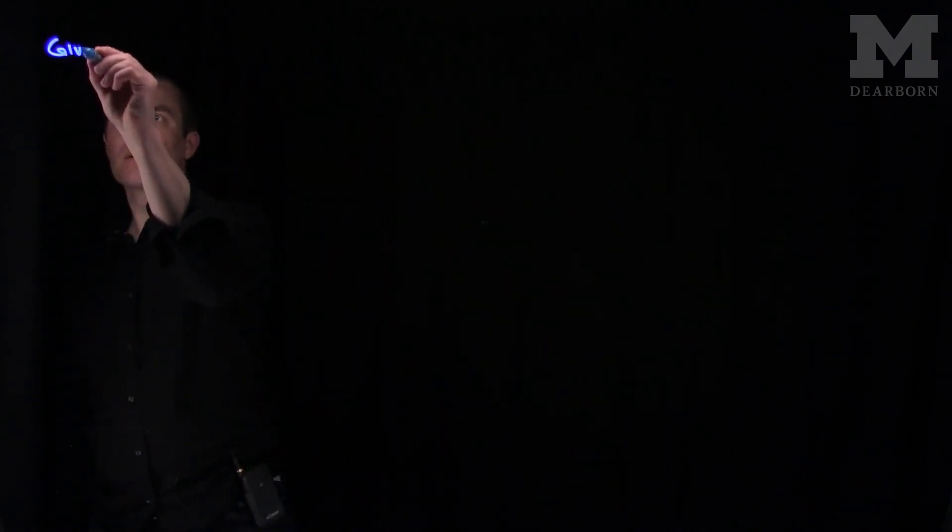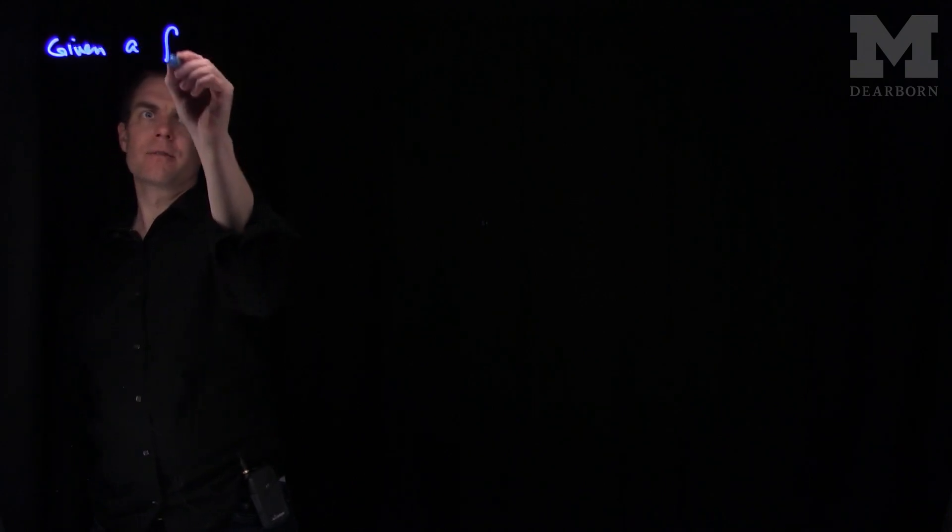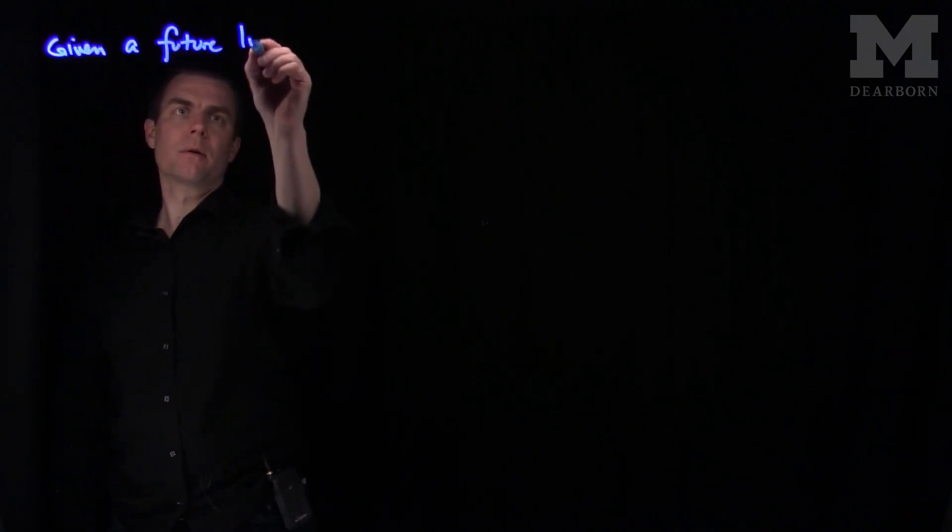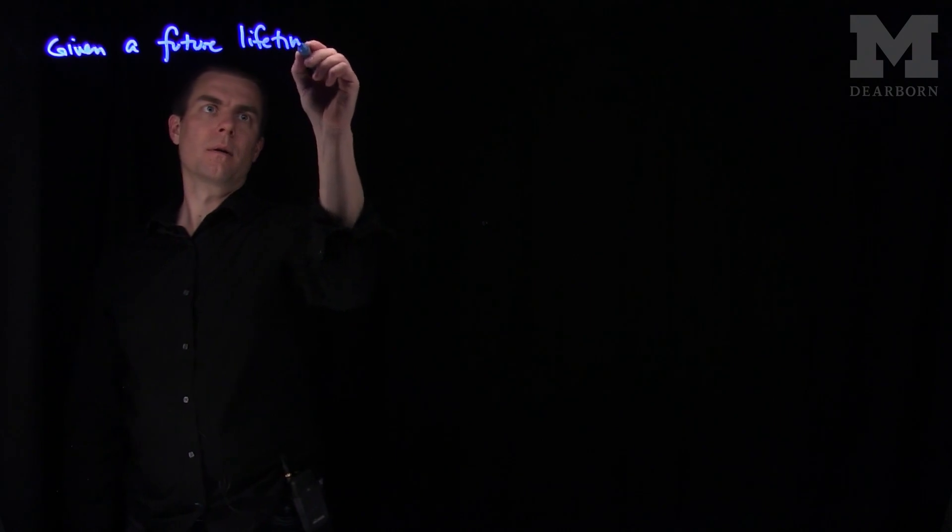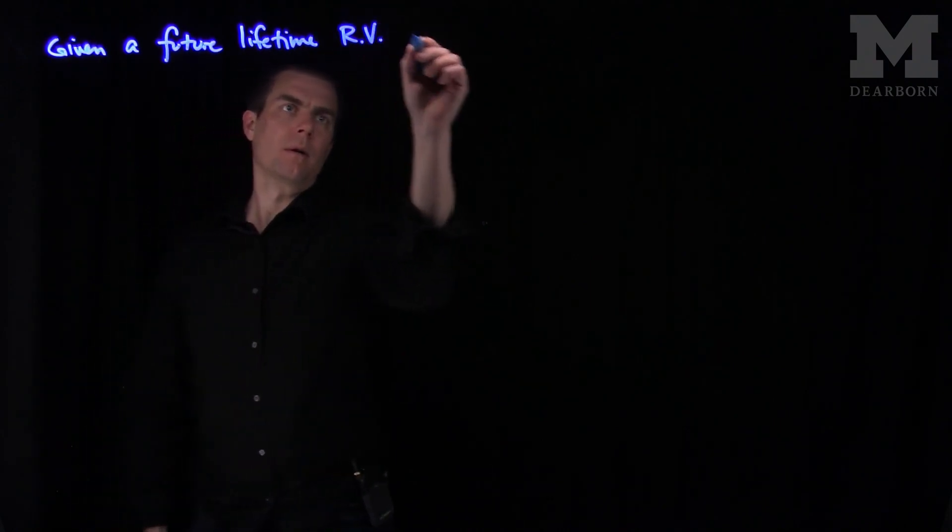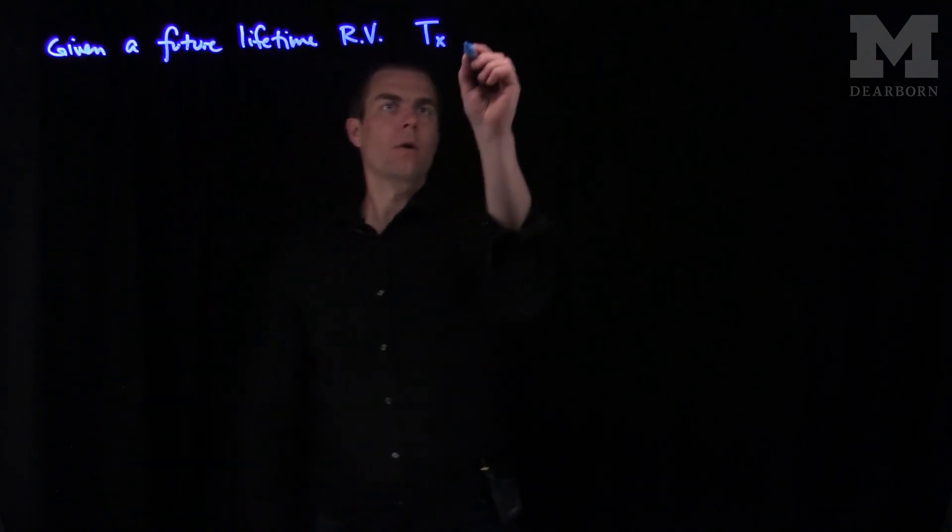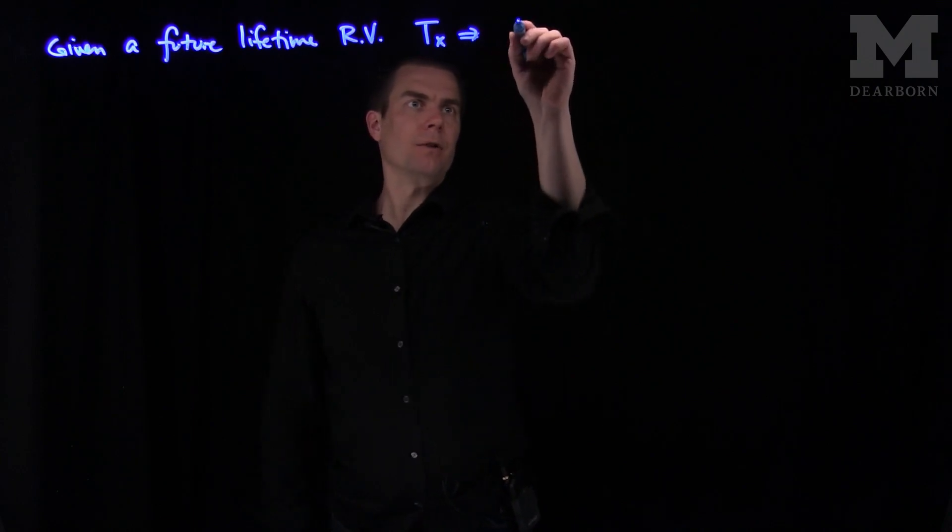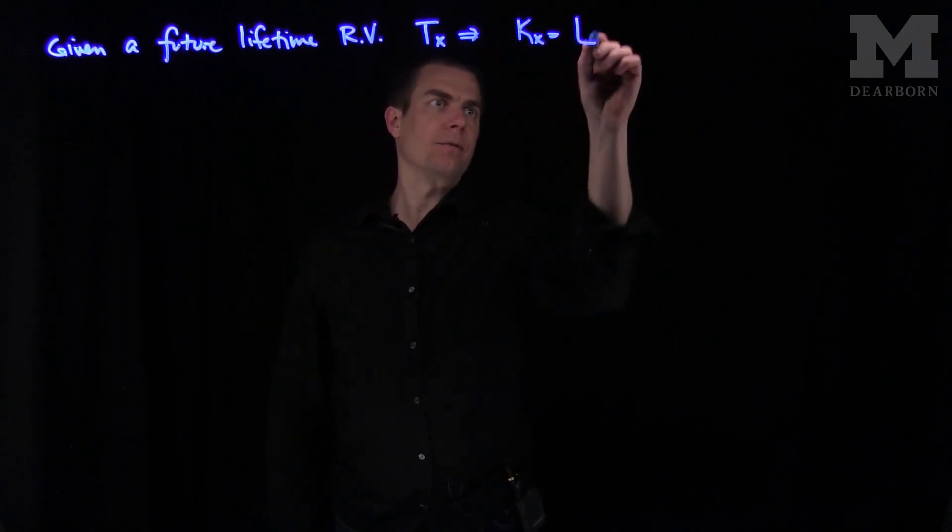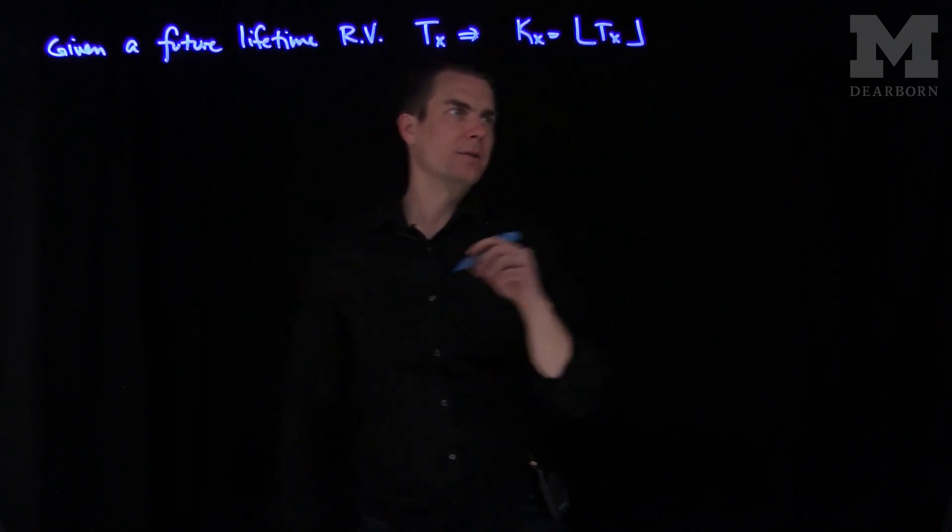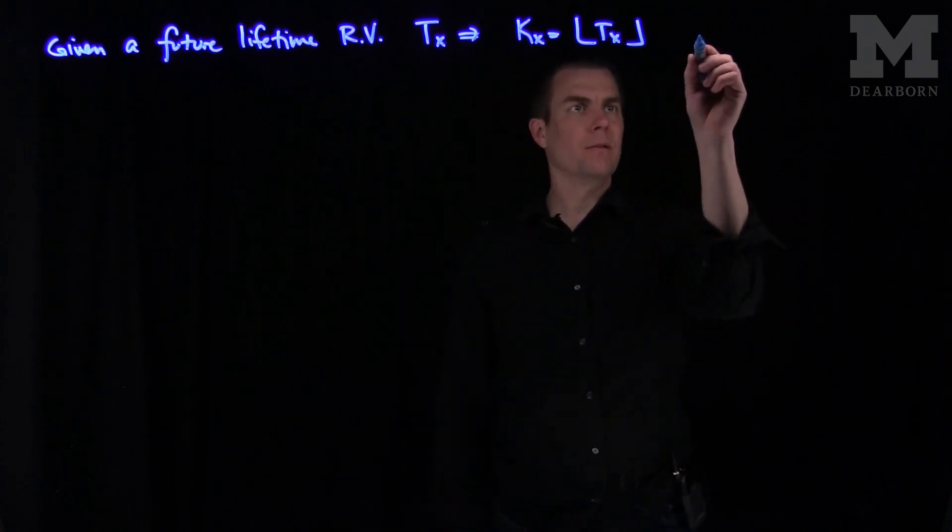So if we're given a future lifetime random variable tx, we can define from this its curtate function kx, which is the floor of tx.